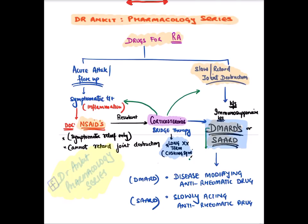In resistant cases we can give corticosteroids, which also provide symptomatic relief. In the long term, we have to retard or slow joint destruction, hence we reduce immunity of the body by giving immunosuppressive drugs known as DMARDs or SARDs — disease-modifying anti-rheumatic drugs or slowly-acting anti-rheumatic drugs. They cannot be given in acute attack because they are very slowly acting, with action coming after many months. Corticosteroids should not be given long-term because they may lead to Cushing syndrome, so in long-term treatment we give DMARDs.